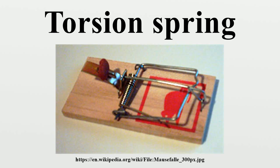In 1987, gravity researcher A.H. Cook wrote: 'The most important advance in experiments on gravitation and other delicate measurements was the introduction of the torsion balance by Mitchell and its use by Cavendish. It has been the basis of all the most significant experiments on gravitation ever since.'